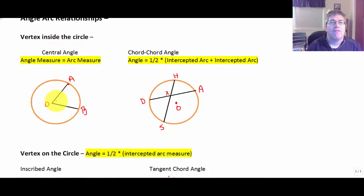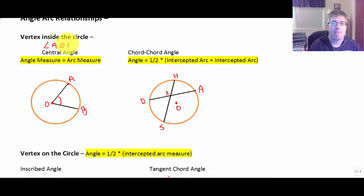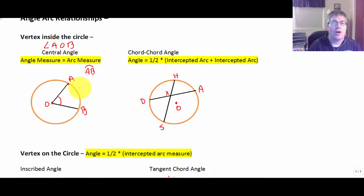Let's begin with the vertex inside the circle. If the vertex is at the center of the circle — so this would be circle O — we would refer to our angle as a central angle. Angle AOB would be a central angle, and its angle measure would be the same as its intercepted arc, arc AB. So if arc AB is 57 degrees, then angle AOB is also 57 degrees.